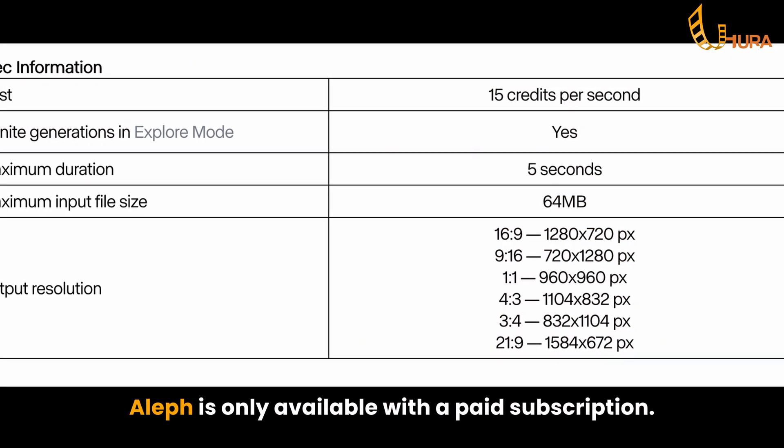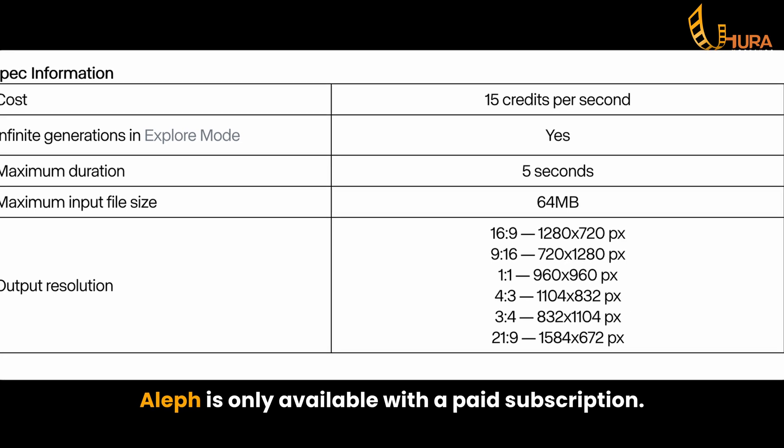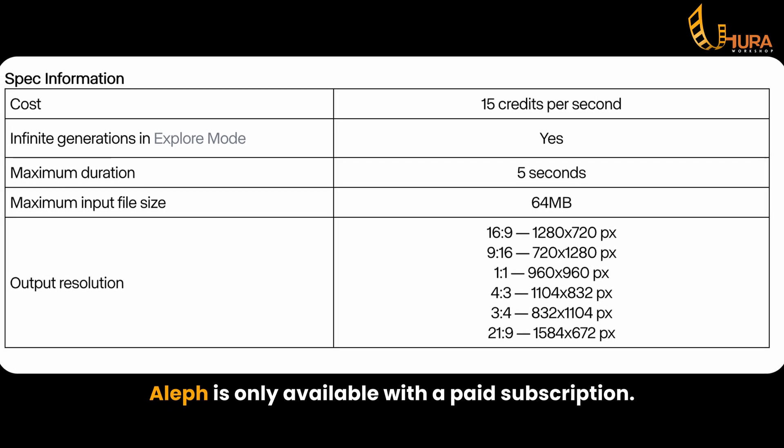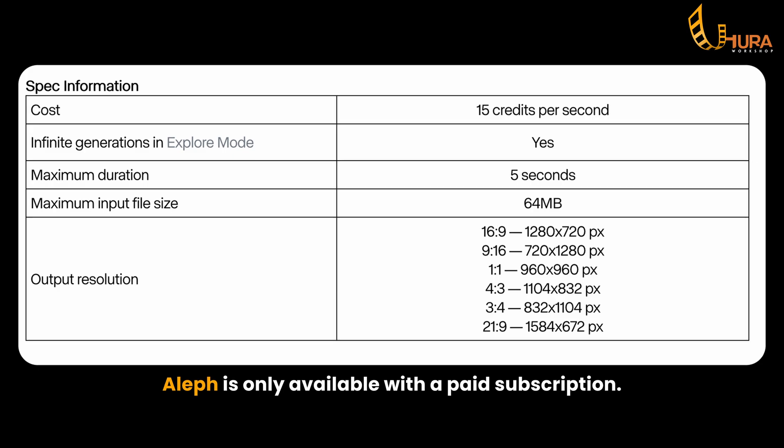Aleph costs 15 credits per second, meaning a five-second clip costs you 75 credits. Right now, you can only generate up to five seconds at a time. Personally, I think it's powerful, but the pricing feels steep — extremely steep. 75 credits for a five-second video. For me, the results are impressive but not flawless. If you did this effect with a traditional VFX pipeline, you'd get better results. But Aleph is brand new and it's only going to get better from here.